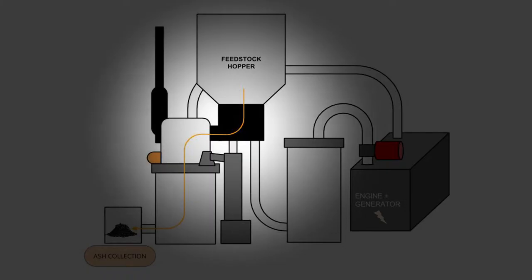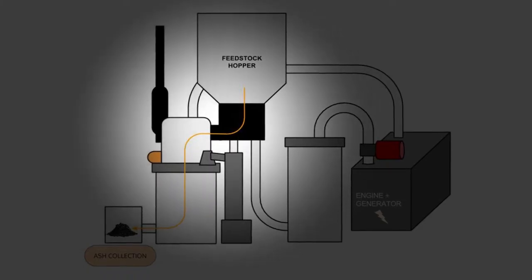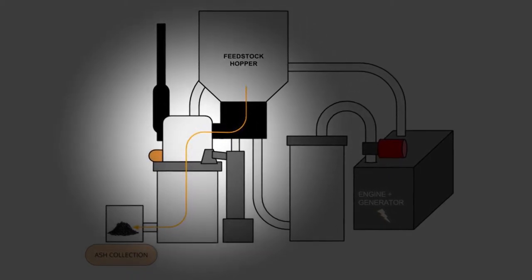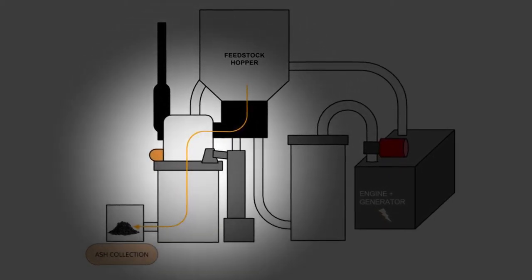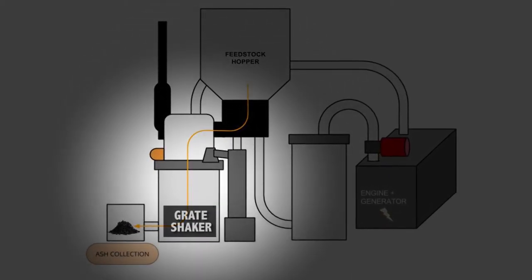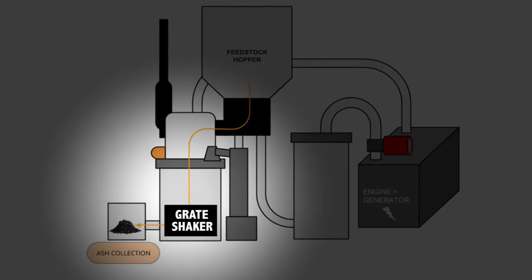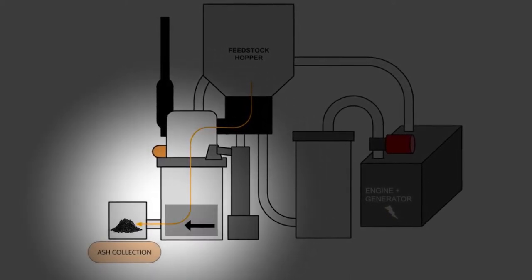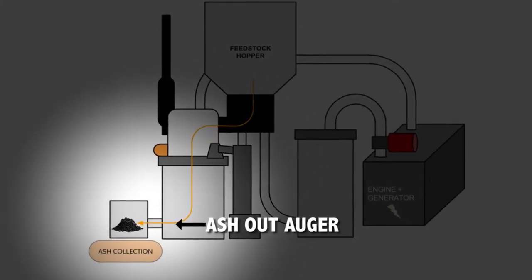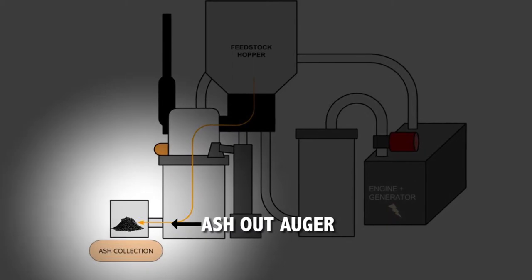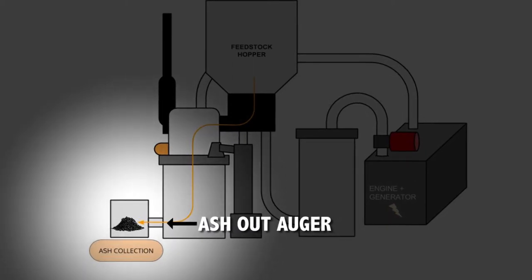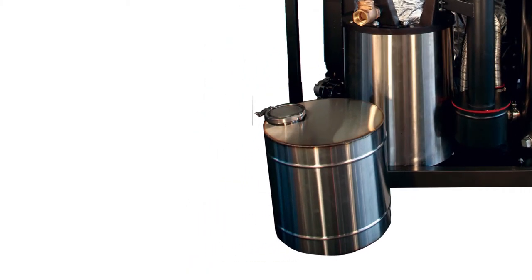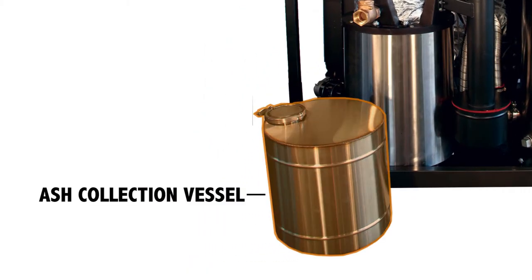After the feedstock is burned up in the reactor, it ends up as black waste char ash, which falls into the bottom of the reactor driven by the movement of the grate shaker. The char ash is pushed out of the reactor by the ash-out auger into the ash collection vessel, which needs to be emptied every day.